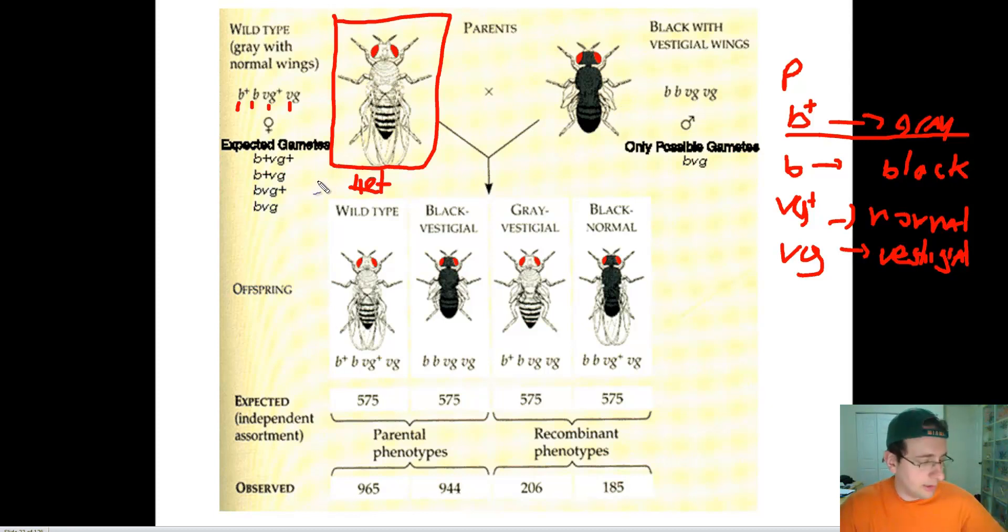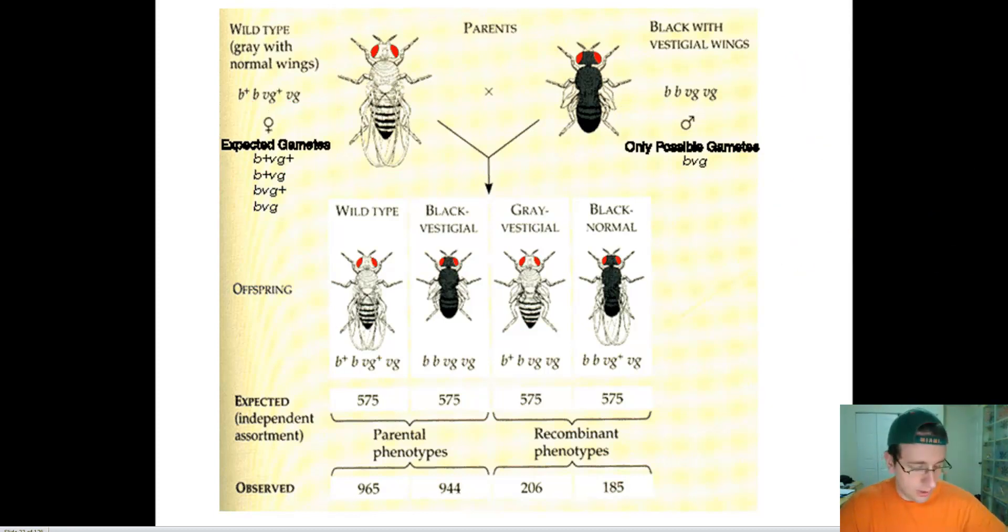Now remember from what we learned in our genetics video, what are the gametes which this person can create? If you have someone who's homozygous for two traits, that's two to the power of n, where n is two. So you're going to have four different gametes. And you see here that this person can actually make four gametes. This fly will actually make each one of these possible gametes here. So this gamete is homozygous dominant for both, homozygous dominant for one but recessive for the other, and so forth.